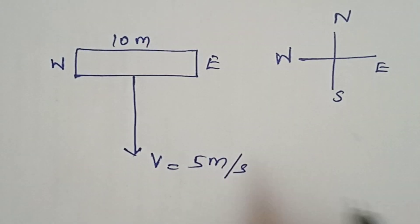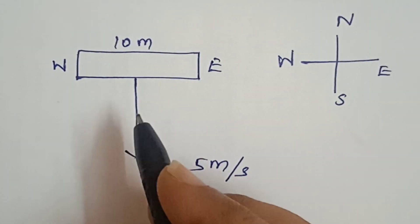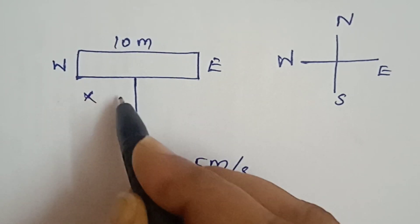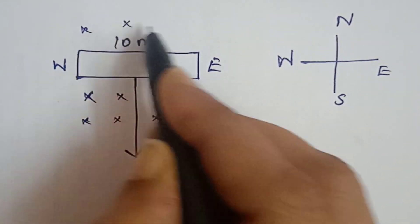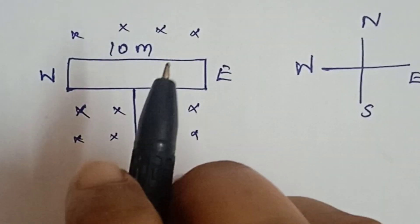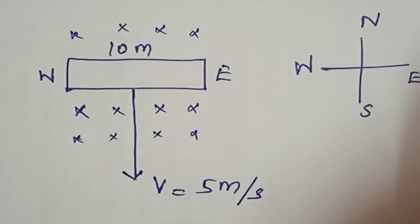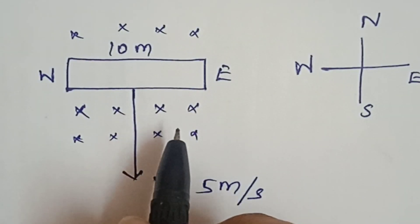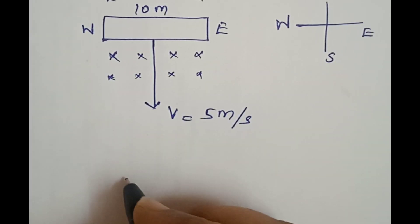This direction is where the direction is, the horizontal component of the magnetic field is perpendicular. So you can see the velocity is perpendicular. The velocity is 5 meter per second. The horizontal component is 0.3 into 10 power minus 4 Weber per meter square. So B and V are perpendicular.